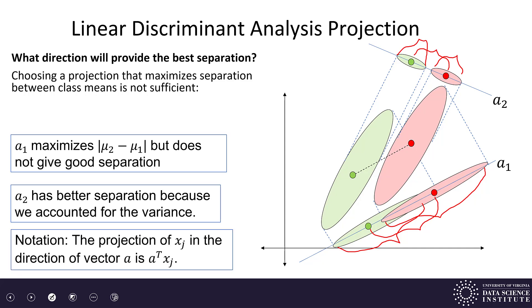A2 is better for class separation because we accounted for the variance within the individual classes. Now for notation: the projection of a point x_j in the direction of a vector a is written as a-transpose multiplied by x_j. We're going to get into some linear algebra and formalism — it's not required to reproduce all these formulas, but it's nice to see where this machinery comes from.